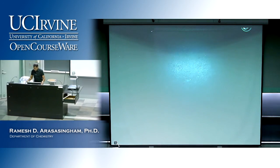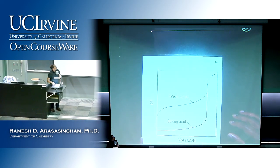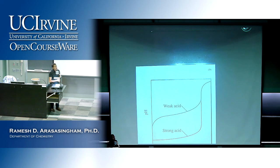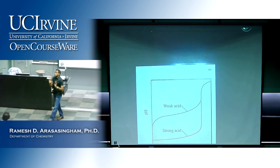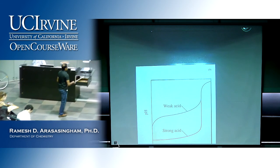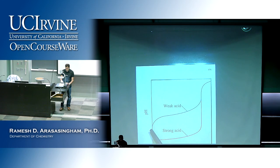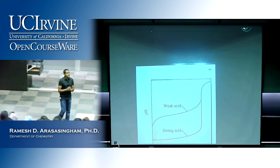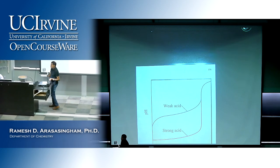Now we're going to move on to looking at a weak acid. The titration curve for a weak acid versus strong base has a different shape. For a strong acid, it's a single S-shaped curve — sigmoidal. But if you have a weak acid, you actually have two S's: one S here and a second S here. If you see a curve with two S shapes, that means you're looking at a weak acid versus a strong base.